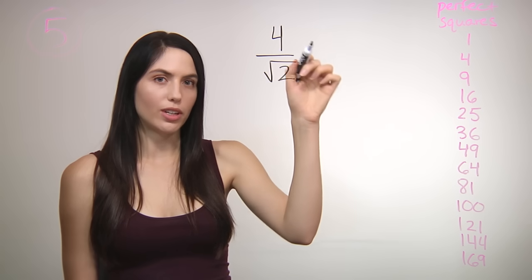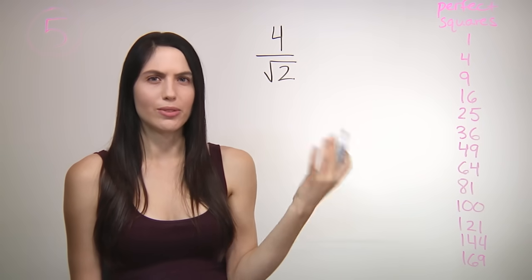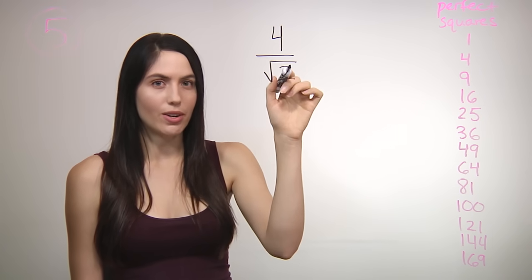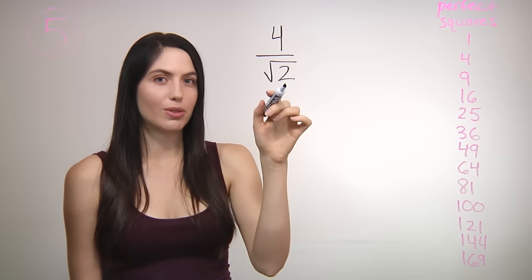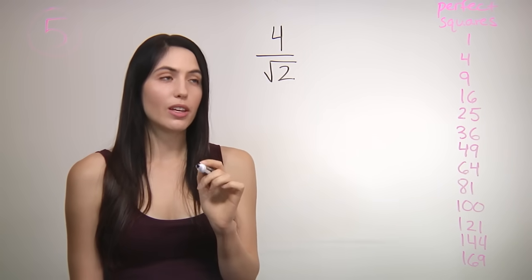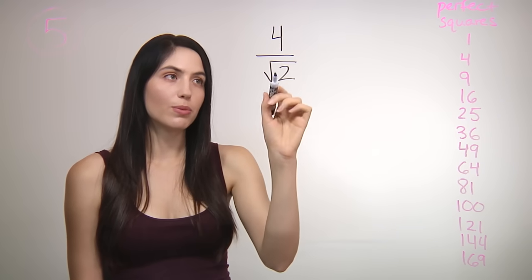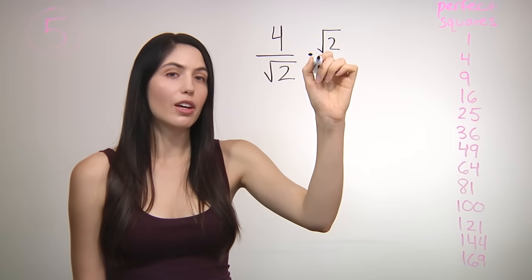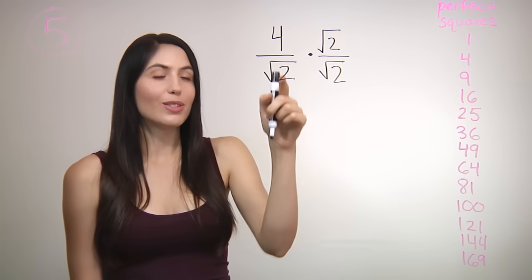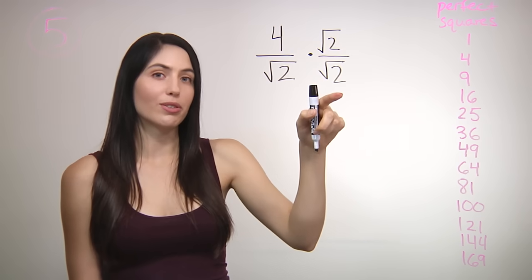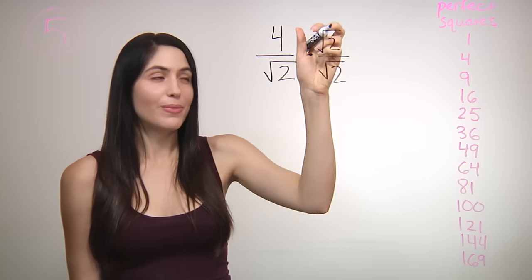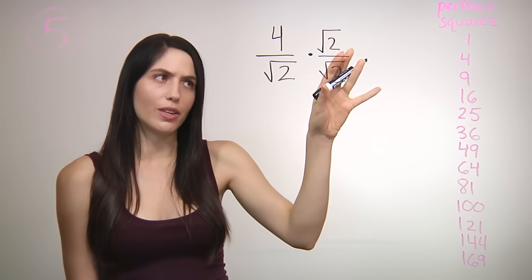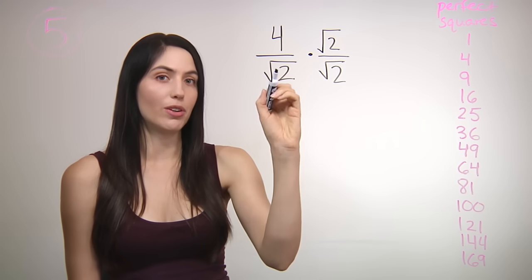What if you have a quotient — a number divided by a square root — and you're supposed to simplify it? This looks pretty simple, but actually it's considered simpler if you get the square root out of the denominator. You're not supposed to have a root in the bottom. So there's a trick you have to use. You take that square root of 2 and multiply this expression by that same exact square root of 2 over itself — root 2 over root 2. The reason you can do this is that this value is only 1, so it doesn't change the overall value of the expression. But it will help you simplify and get that root out of the bottom.